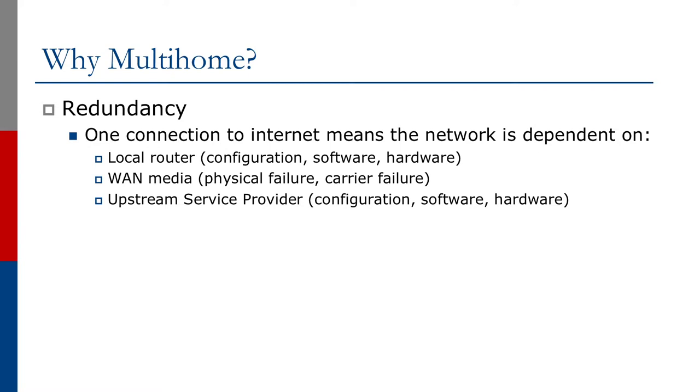Any issue the upstream service provider has will impact your network as well — not just configuration, software, or hardware, but also their operations. For example, if you're a network operator in Europe and your sole connection is through a network operator in North America, that North American operator would do planned maintenance from 4 a.m. to 7 a.m. East Coast time — which translates to 10 a.m. to 1 p.m. in Europe, the height of the business day and really the worst time for any network operator to experience an outage. So being entirely dependent on your upstream service provider is not sensible for operators hosting business-critical applications.